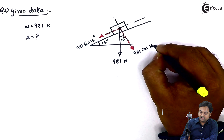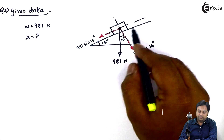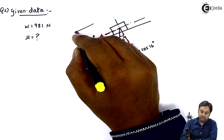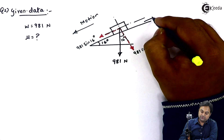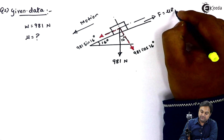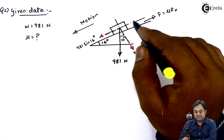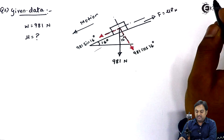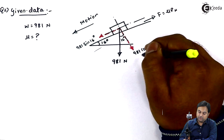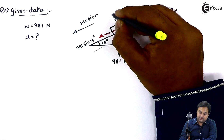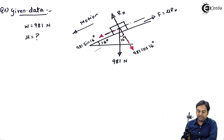Since 981 sin 16 causes the block to slide downward, the motion is towards the left. But friction force F equals μRn acts in the upward direction, opposing the motion. The component 981 cos 16 is perpendicular to the surface, and the normal reaction Rn is opposite to 981 cos 16 degrees.